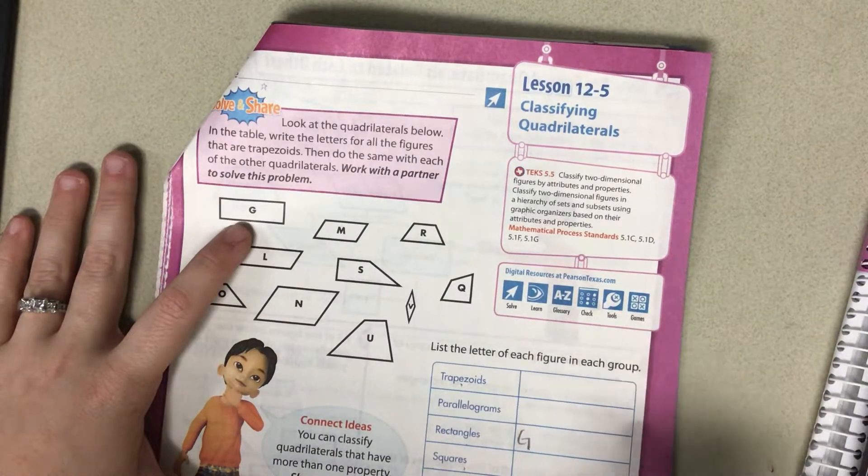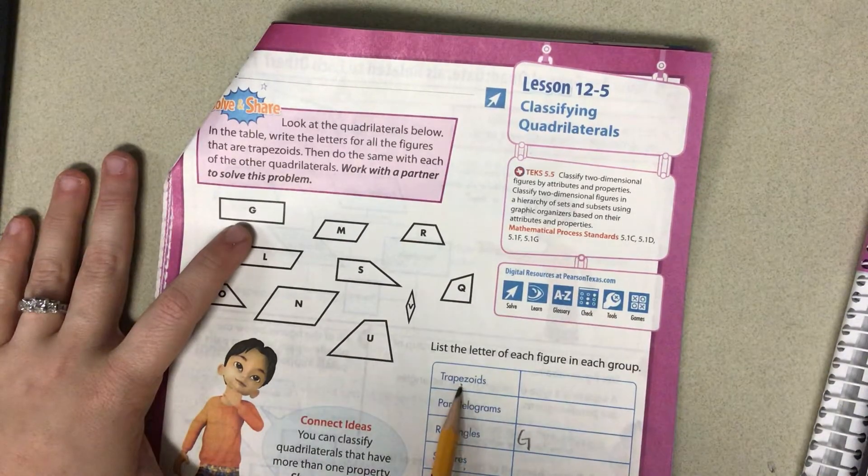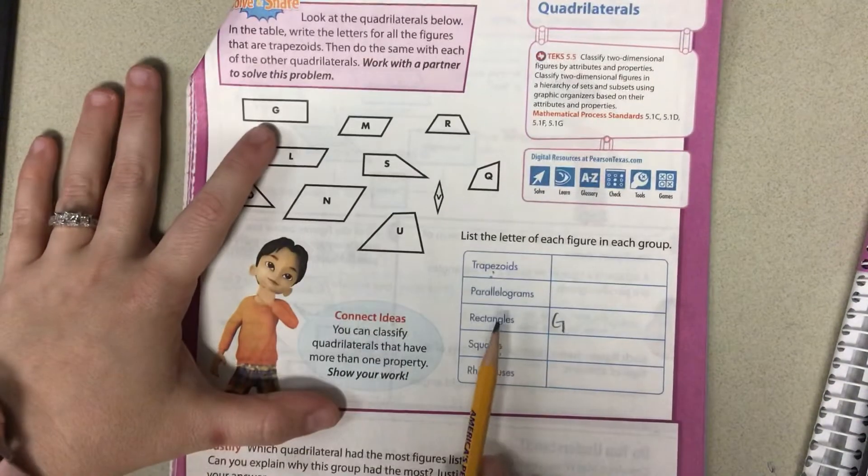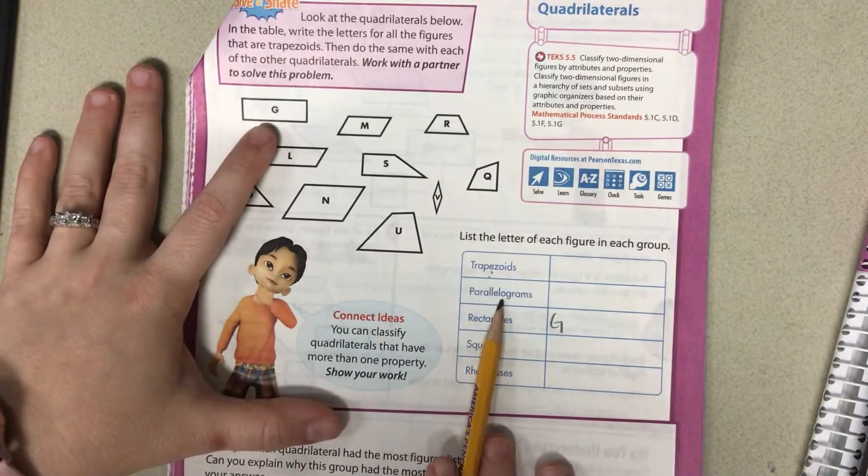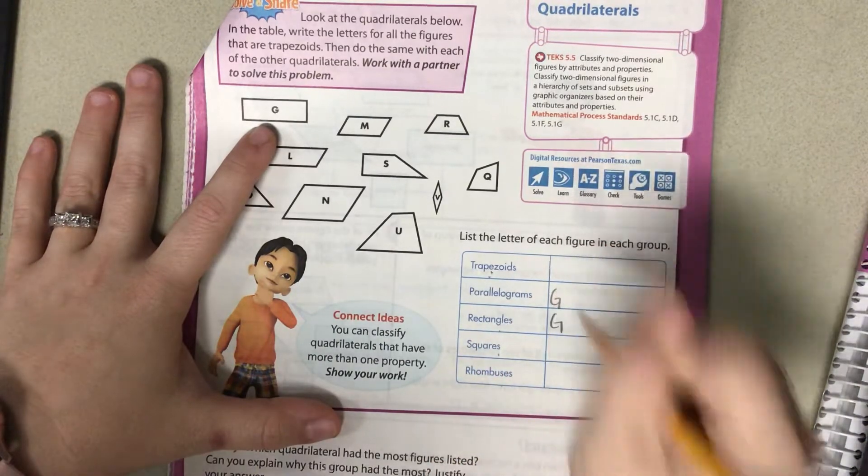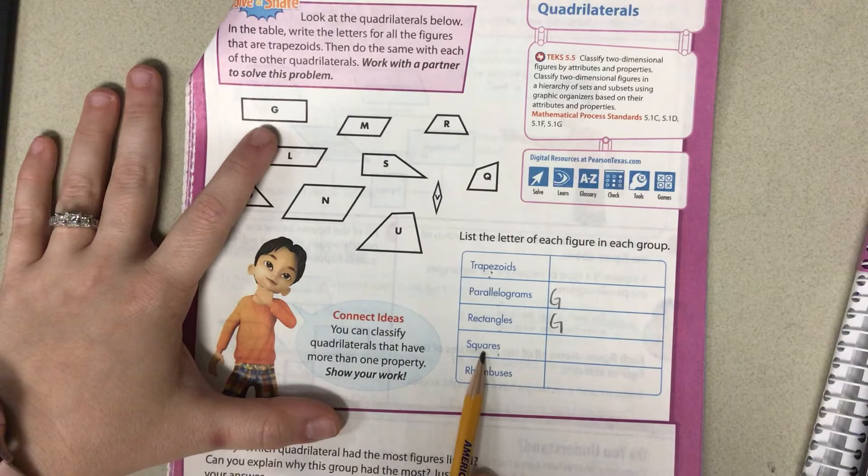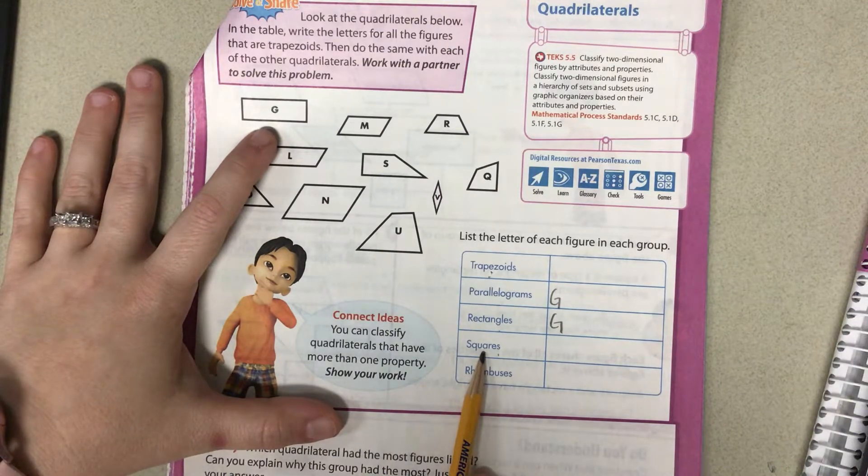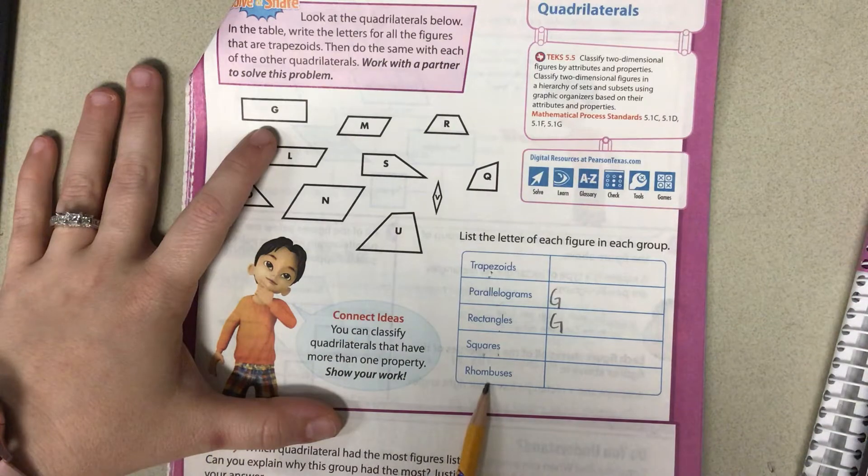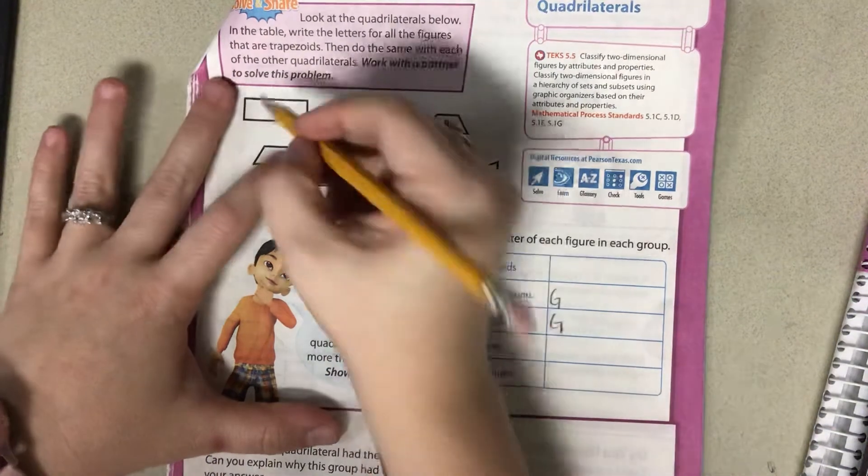Okay, well we know for sure it's a rectangle. Is it a trapezoid? Are all sides the same? No. Is it a parallelogram? Does it have parallel sides? Yes, it does. Is it a square? Are all sides the same? No. Is it a rhombus? Are all sides the same length? No. Okay, so we're done with G.